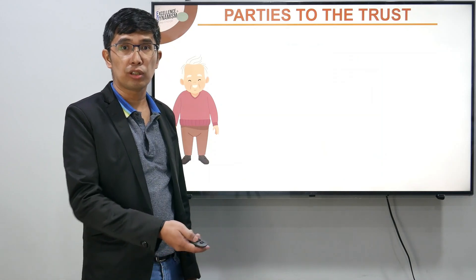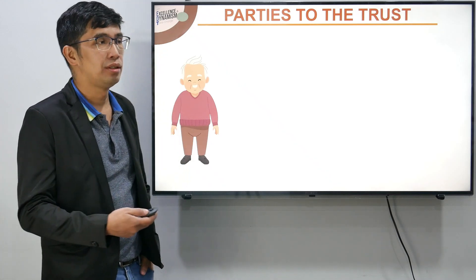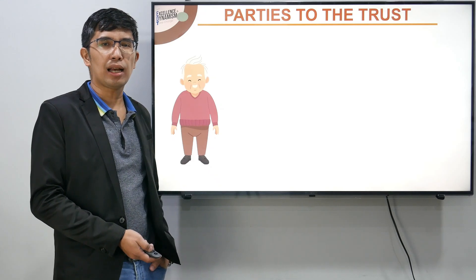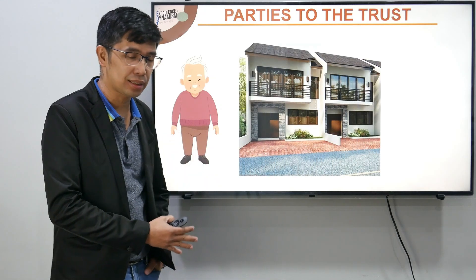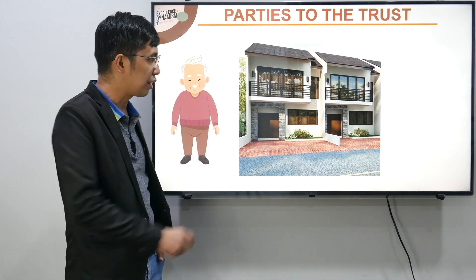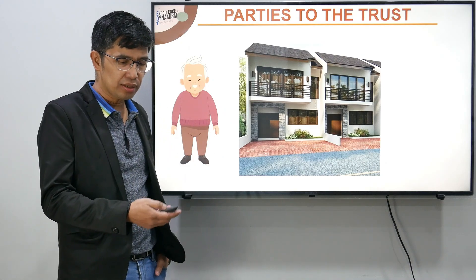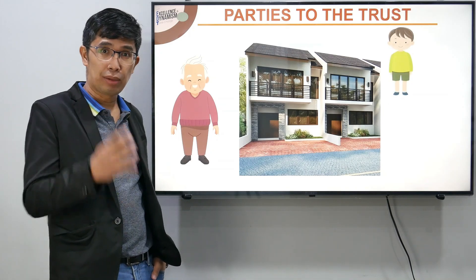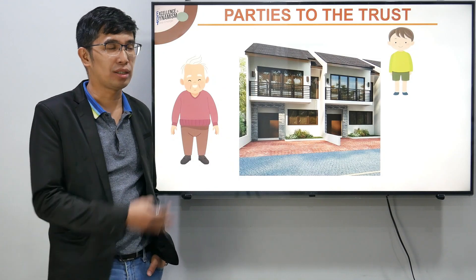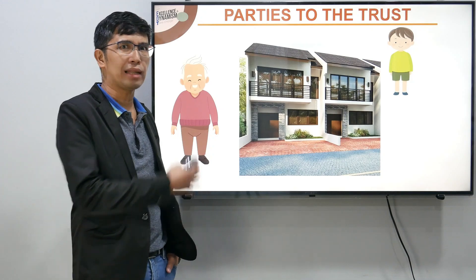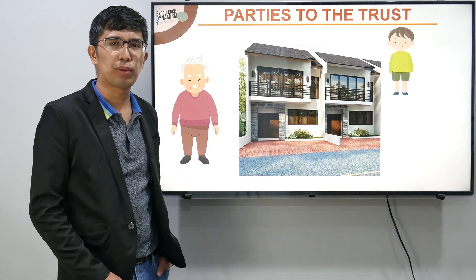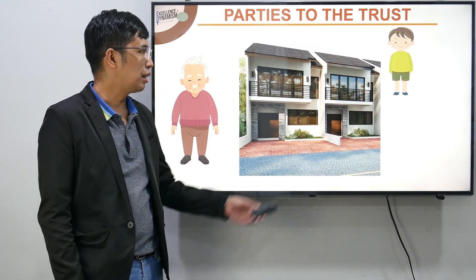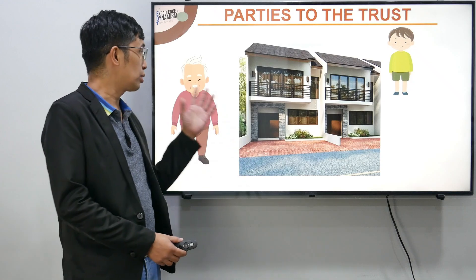Halimbawa, si Pedro — siya yung grantor or donor or trustor — siya ay merong pag-aari, halimbawa sa Batangas, mga apartments. And then he intends to give this to his apo, na medyo bata pa. Pero dahil bata pa yan, wala pa siya sa tamang pag-iisip at wala pa siyang capacity to manage the property na gustong ibigay nitong si grantor.